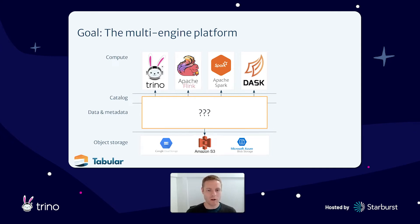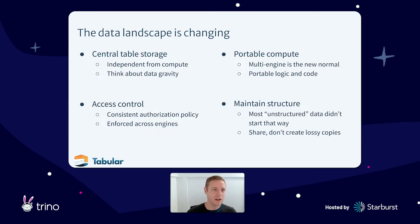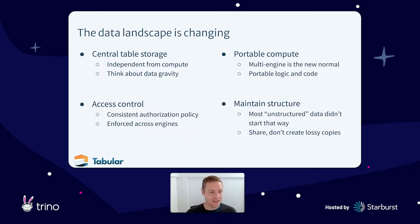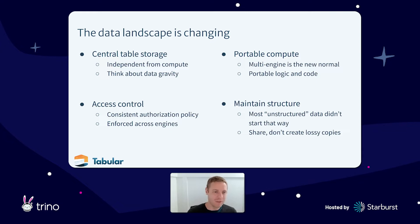Almost everyone I talk to has Trino, Flink, Spark, and some other engine in the mix, like maybe Dask if you're doing Python processing. What we want is some way of tying all of these engines together into a cohesive architecture — this multi-engine platform where each engine can do what it's really good at. Trino for low latency ad hoc queries, Flink for streaming data and constantly giving you the latest up-to-date data, and Spark for ML workloads and other things. This seems to be what we're already building, but there are a lot of challenges.